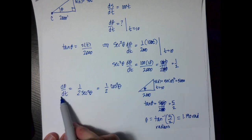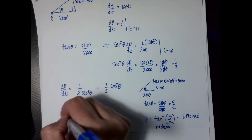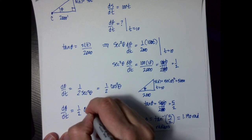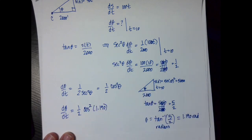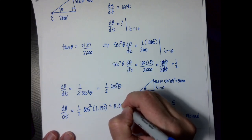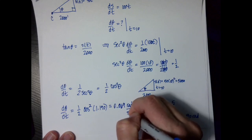Well, now that I know the angle, I can find d theta dt. So d theta over dt, here's the half, and I'm going to do the cosine squared of 1.190 radians, and when I push buttons on my calculator, I get 0.069 radians per second.